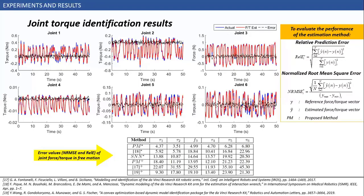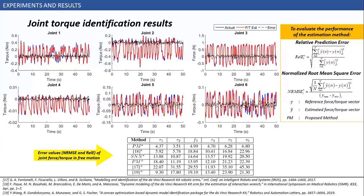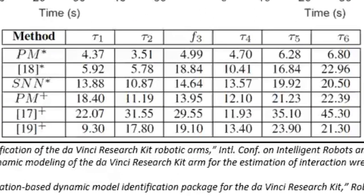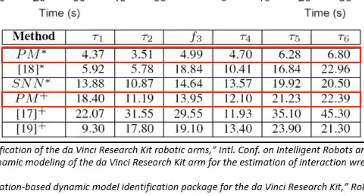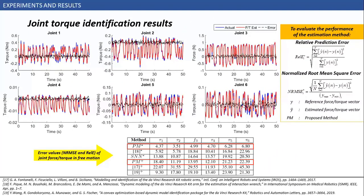To evaluate the performance of our method, we used two different error calculation formulas given on the right. Additionally, we were able to compare our results with some other methods utilized in the literature by using the given error formulas. And it can be said that our method is better than or comparable to others as can be seen from the table. Here, another important point is that using separate neural networks for each joint provides an improvement over the single neural network.